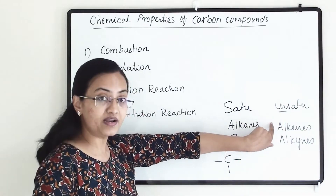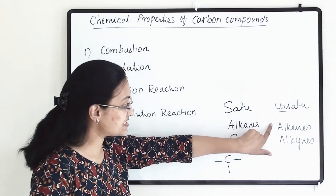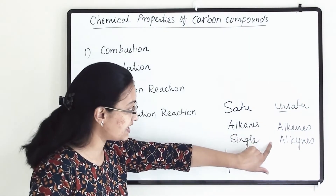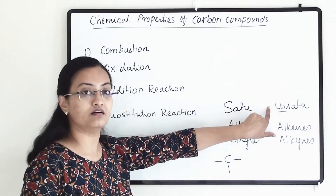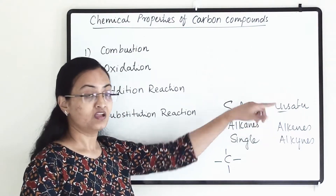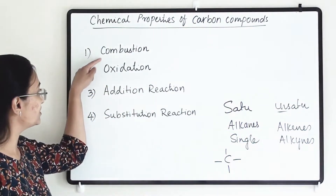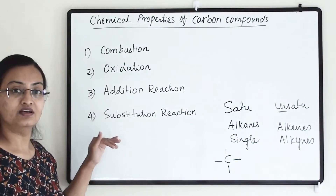Double-bonded and triple-bonded hydrocarbons — alkenes and alkynes — are unsaturated hydrocarbons. Now let us get into the details of all these reactions.